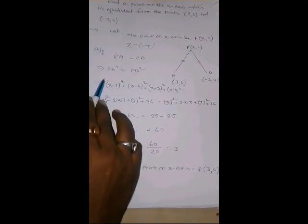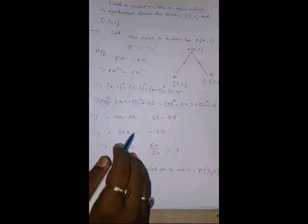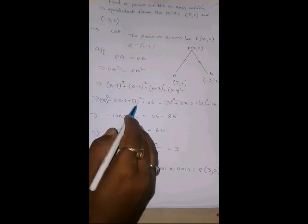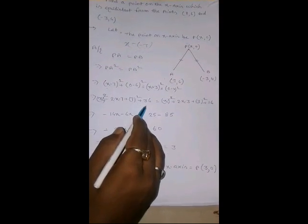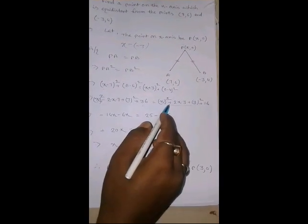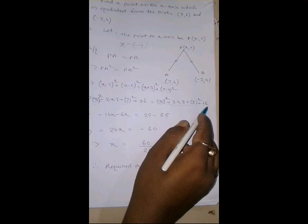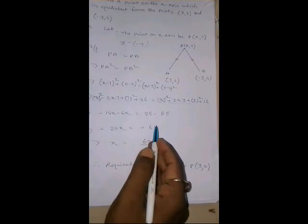So, this is the distance formula. And, you can understand why we have done square, so that we have no need to write square root. Now, use the formula A minus B whole square. x square minus 2AB plus B square. 6 square is 36. Here again, A plus B whole square. And, 4 square is 16. And, then, by just mere calculation.